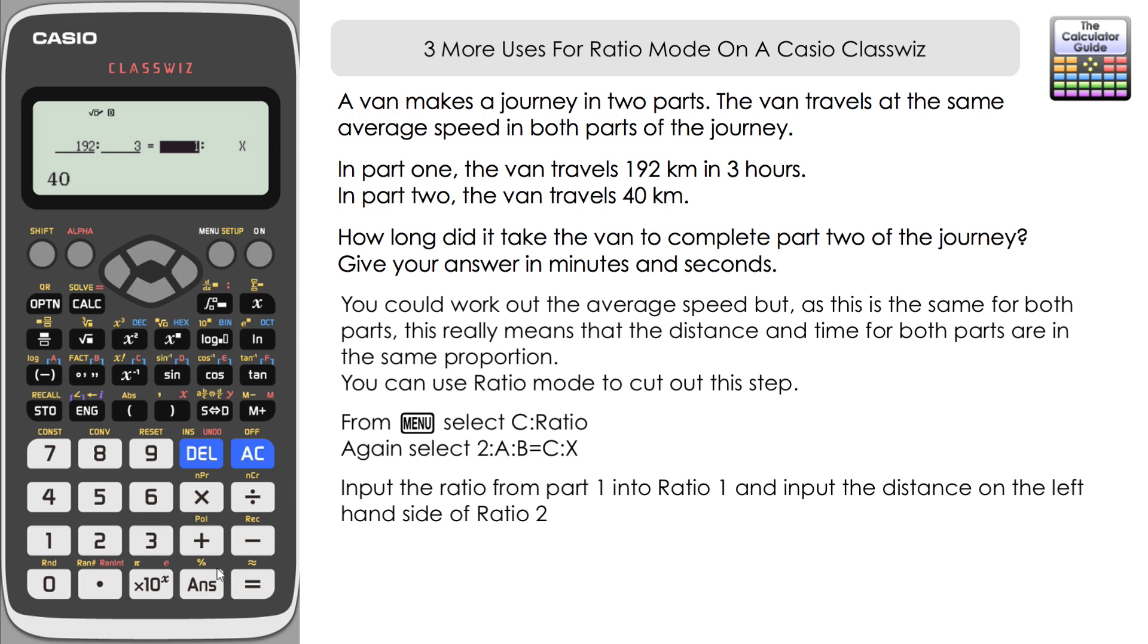And it's the same proportion for ratio two. This time, we know that the distance is 40 kilometres. So obviously, we're expecting a shorter time than three hours here. Just press equals. Now we've got this as 5 eighths. Now what does that mean in the context of give your answer in minutes and seconds? Well, what we can do is use the degrees, minutes and seconds button.